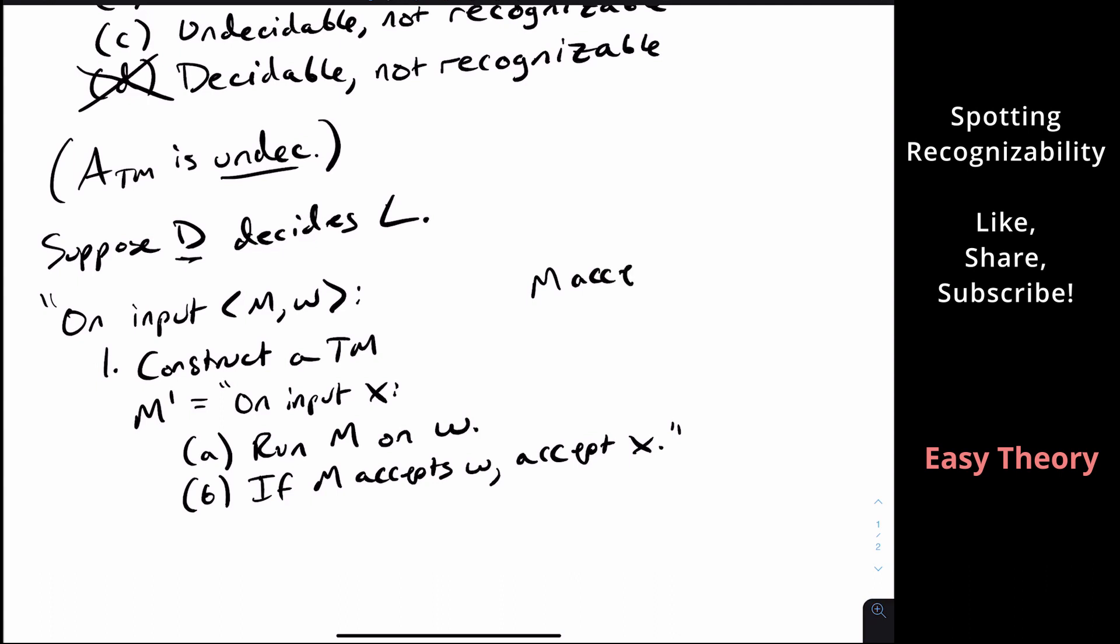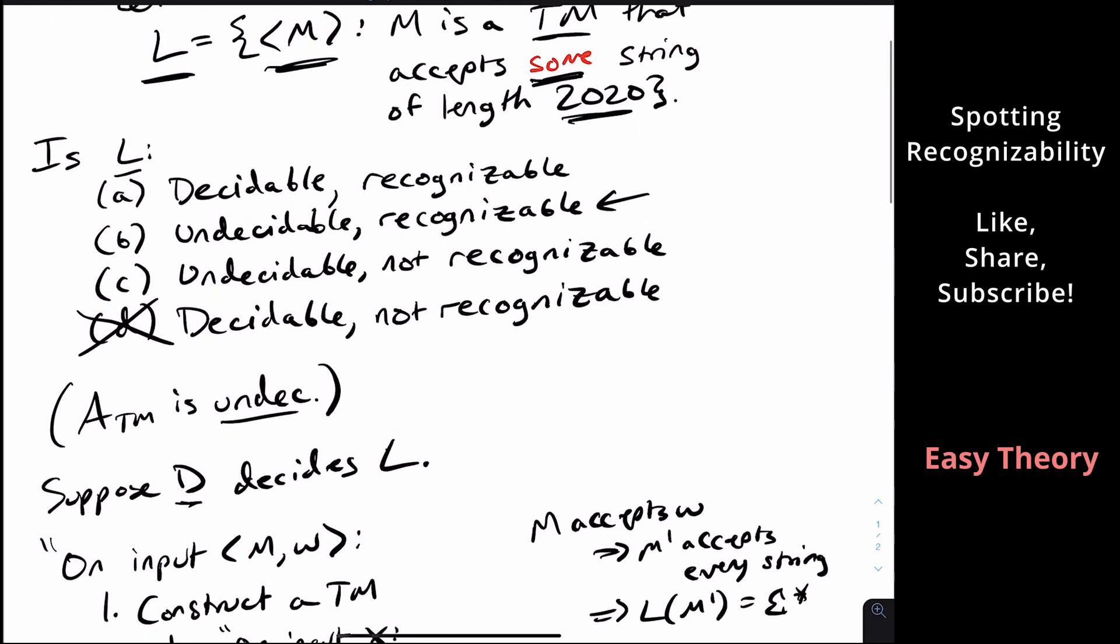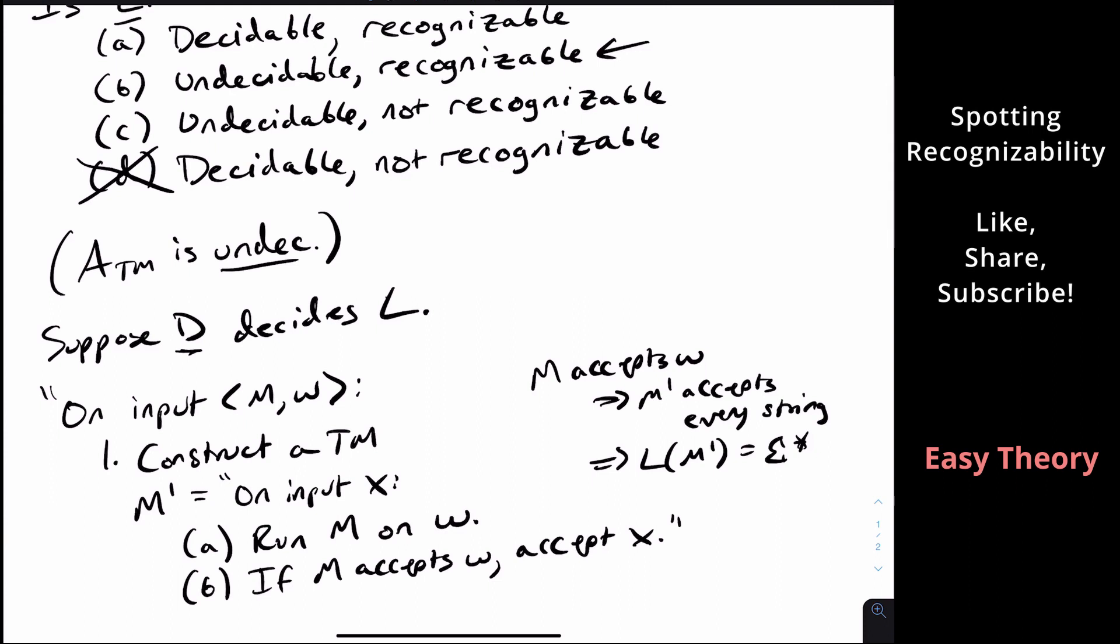So if M accepts W, then that means that M prime accepts every string. So it accepts every string, which means that the language of M prime is sigma star. Well, that means that it accepts some string of length 2020 because sigma star is every string.